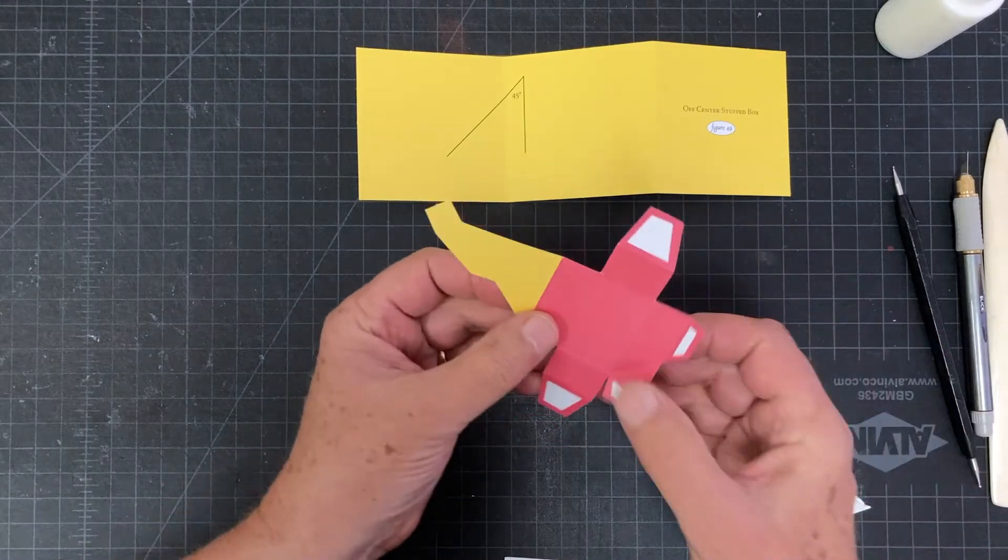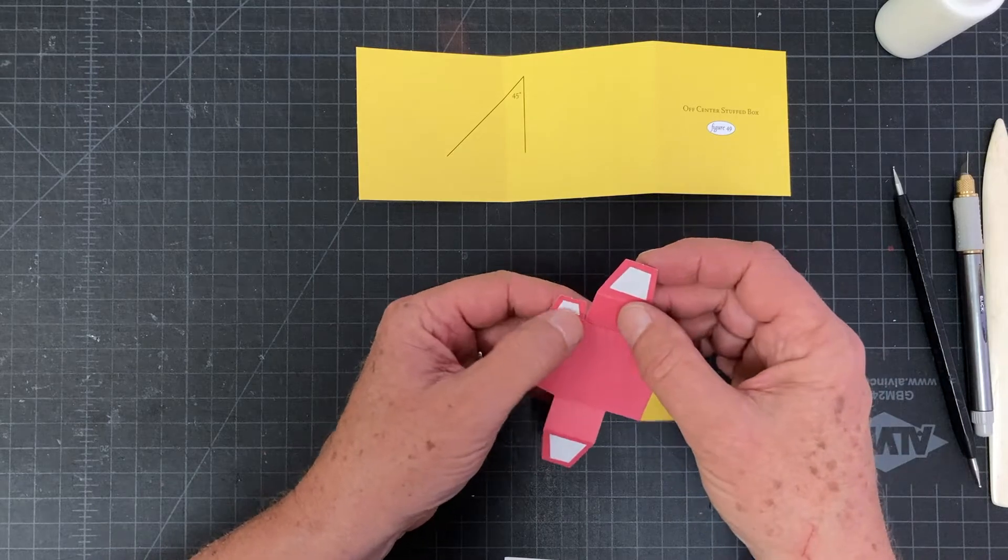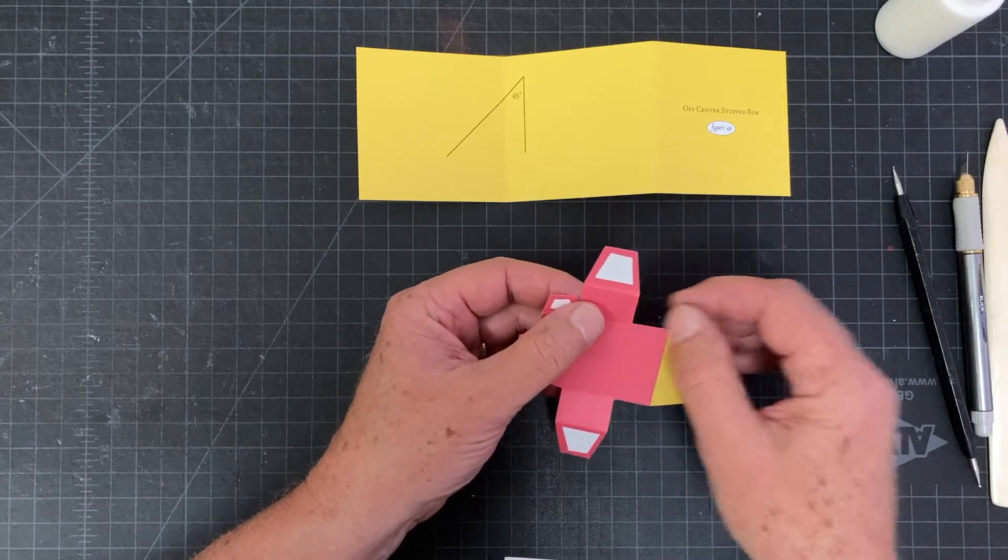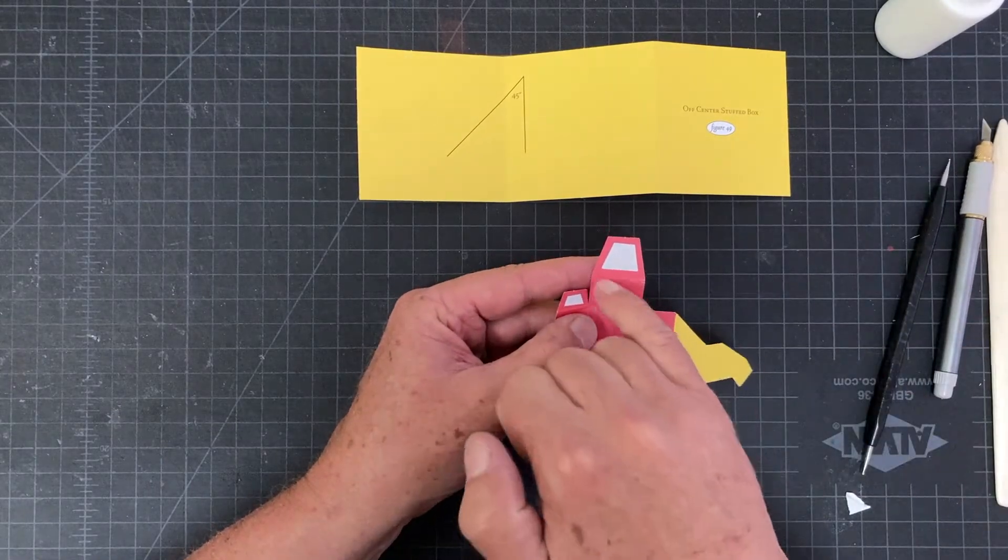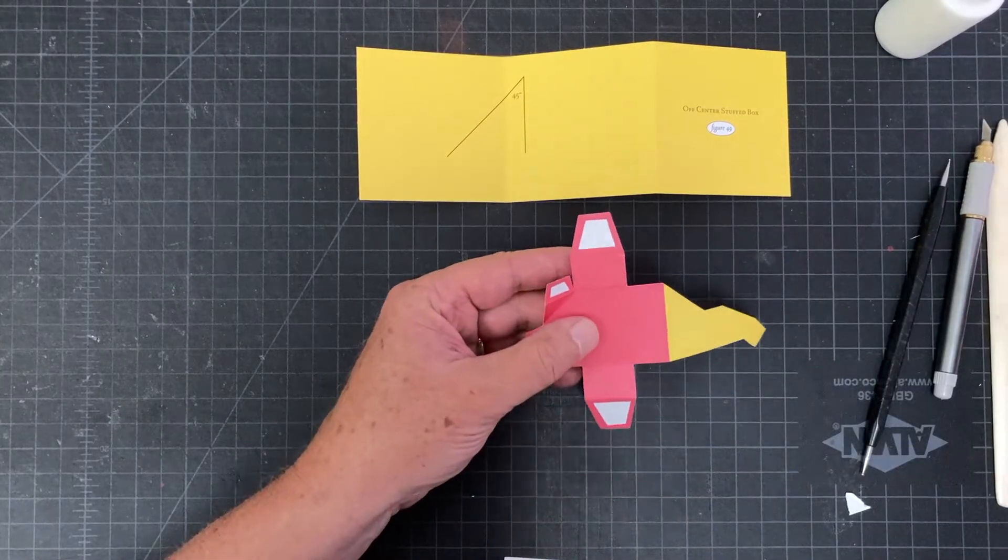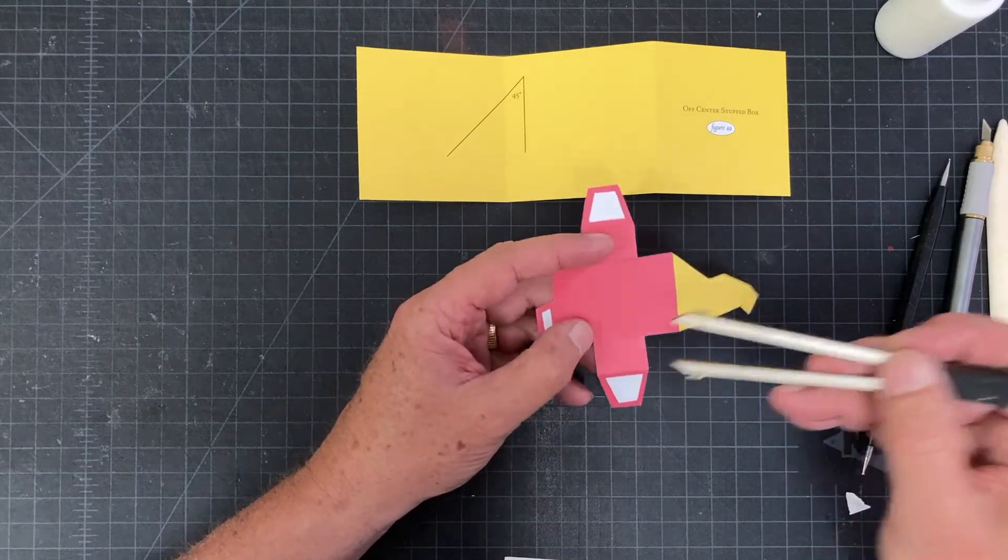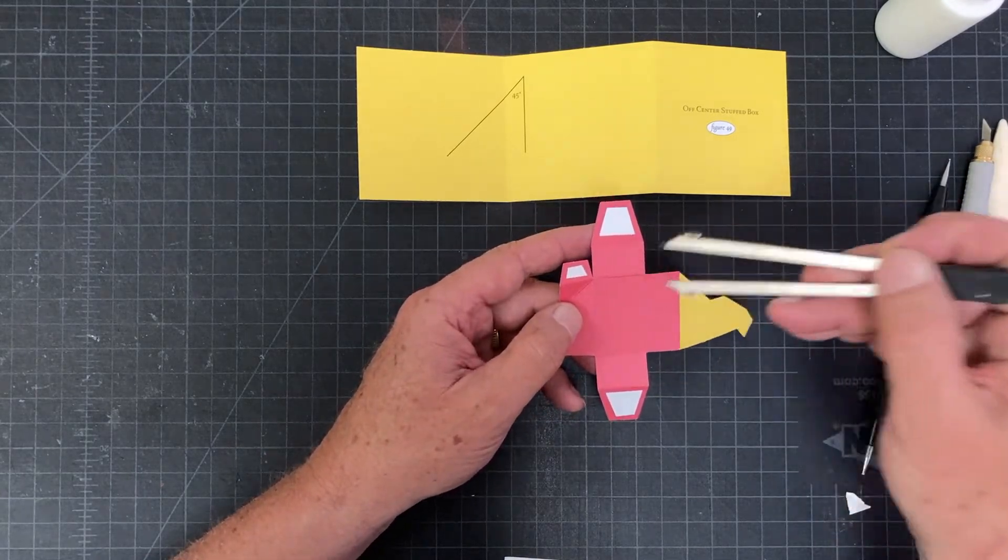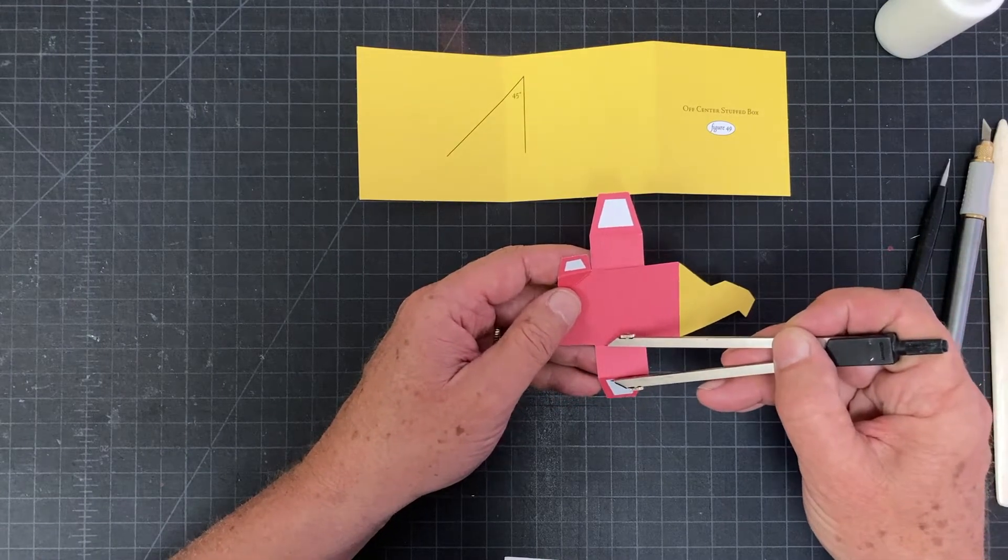One thing I noticed is that on these stretch goal pieces, the self-assembly kit, some scores are missing. So this score was missing right here. There's a couple of ways you can add it. You can use the pattern that you download and get the correct position of that score from the pattern, or this is how I measure.